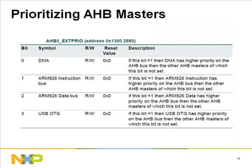A register is provided that allows the application to prioritize the four AHB masters. This is an excellent feature as it gives the option of four masters and provides a way to prioritize the four independent systems. This feature is particularly useful for DMA operations.